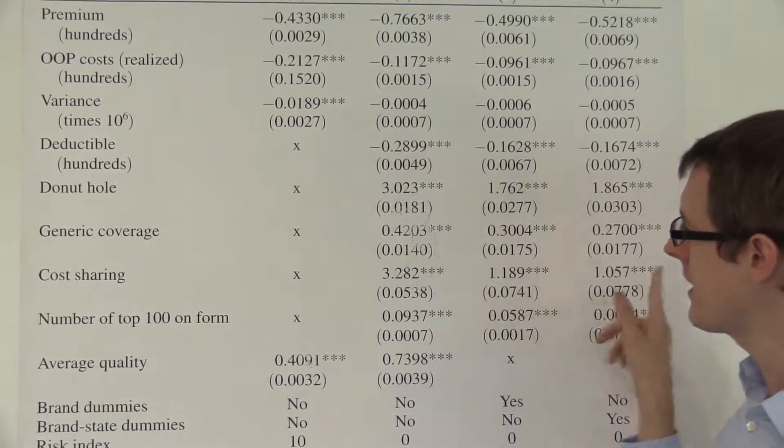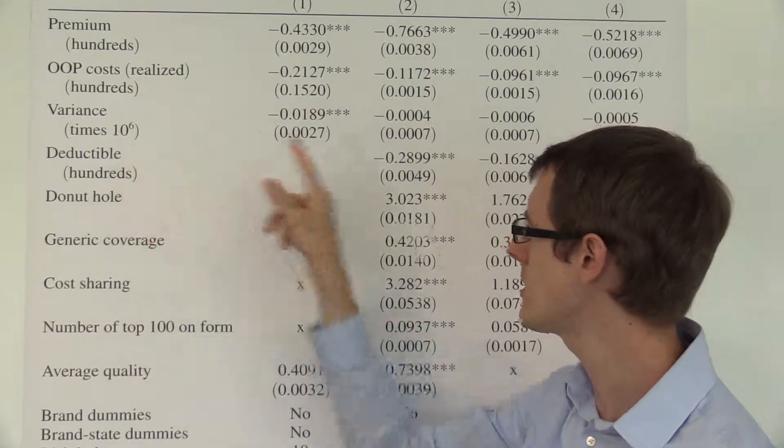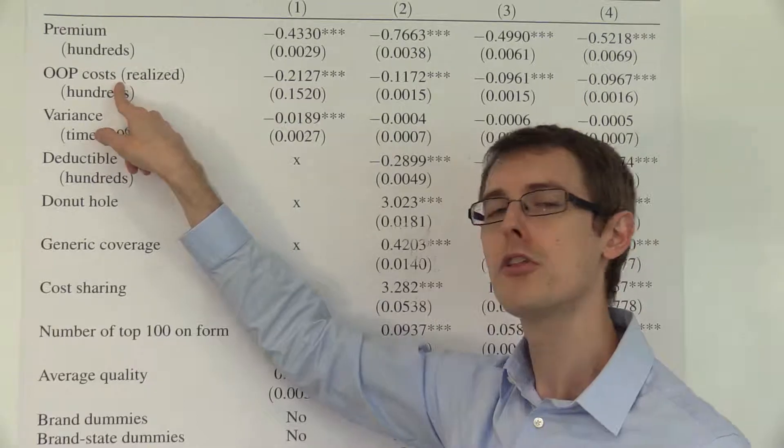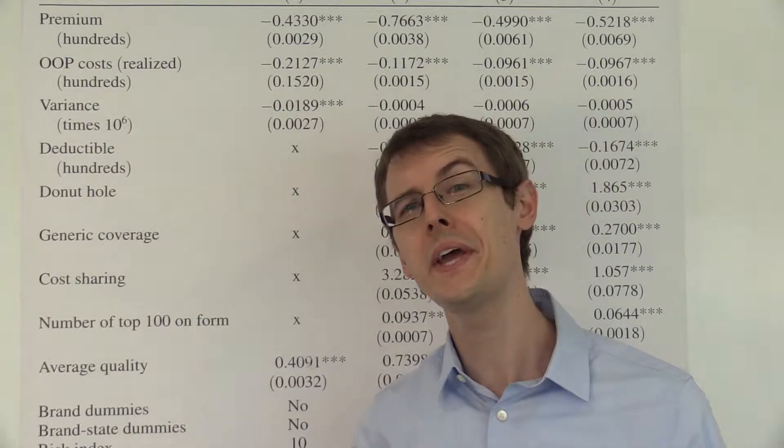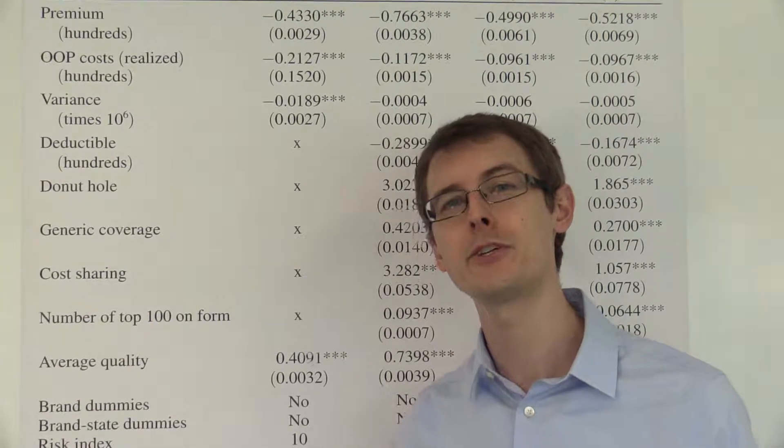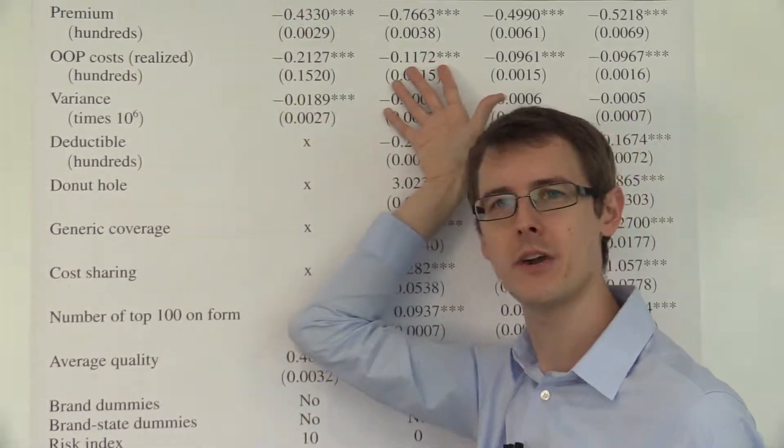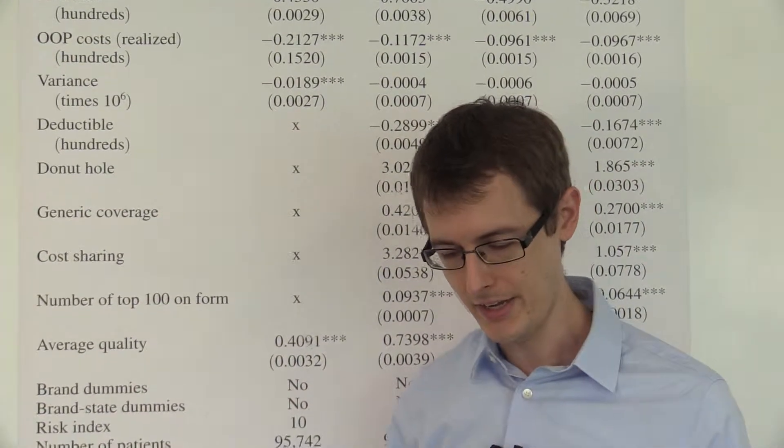And yet in all of these specifications, we see that people care about what the deductible is and what the donut hole is, above and beyond its effect through their costs. So of course you should care what the deductible is, but only insofar as it affects how much you're paying. Once we've controlled for that, which we have because we've got these variables, you shouldn't care about it. So that's the main finding in their paper.